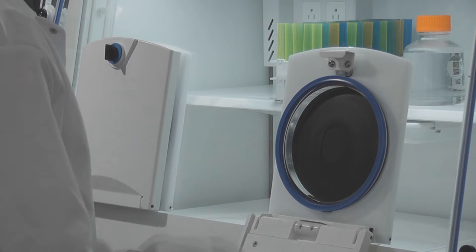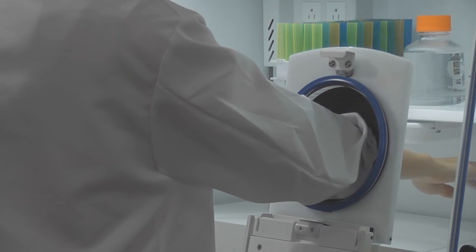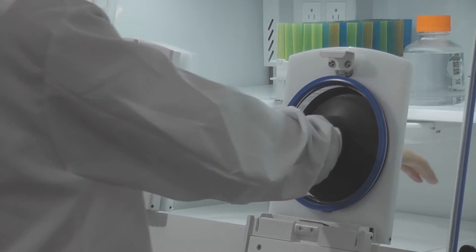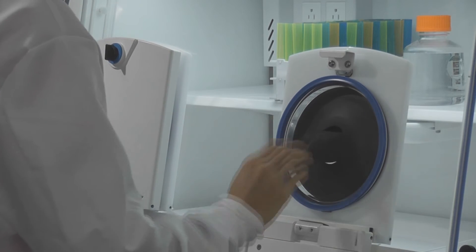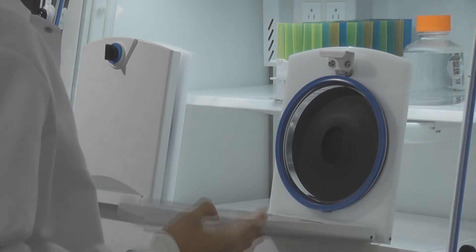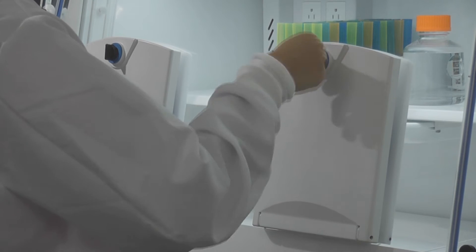To gain access to the workstation, open the outer door. Insert your hand and begin working. When finished, withdraw your arm slowly. Tuck in the flap and close the door. It's that easy.